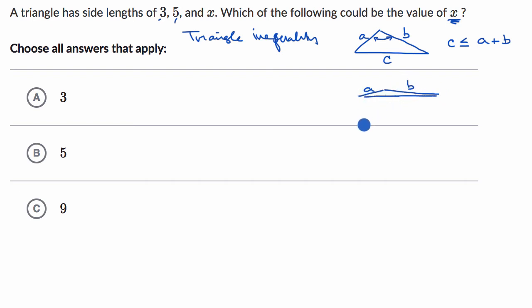But the extreme case is where that angle goes all the way to 180 degrees, and it looks like this, where it's A and B. So the extreme case is when C is equal to A plus B. C can never get larger than A plus B. So C is always going to be less than or equal to A plus B.